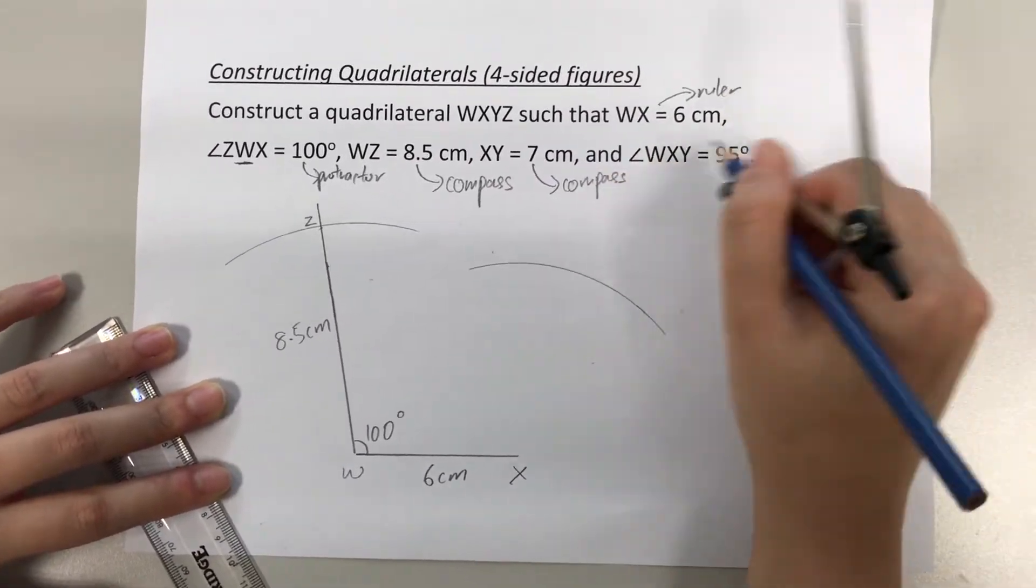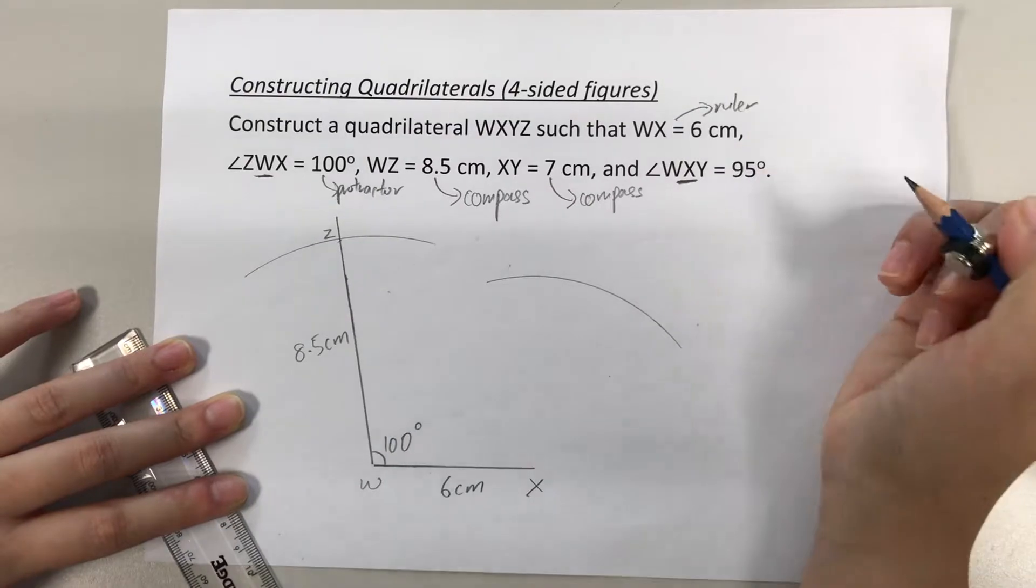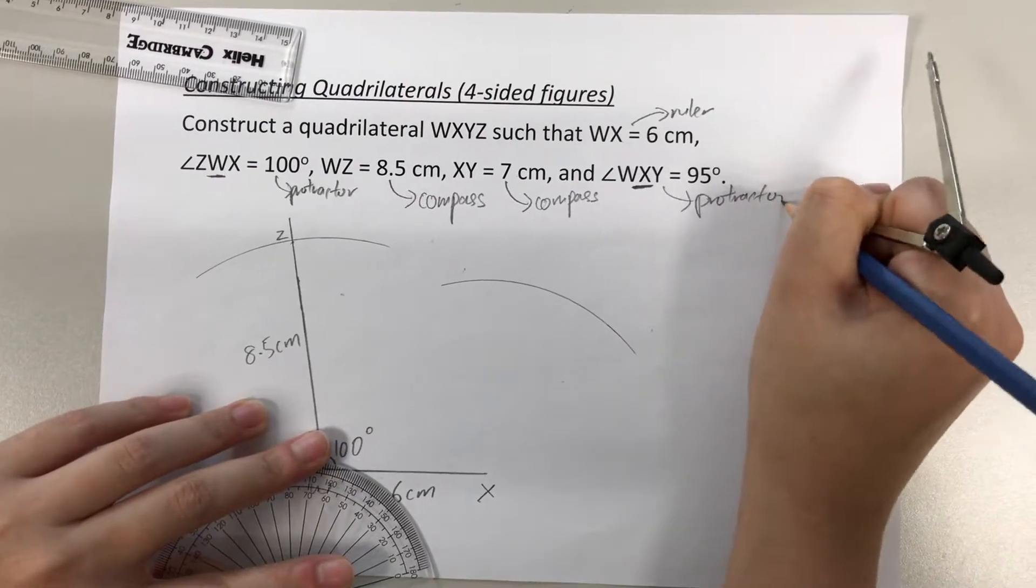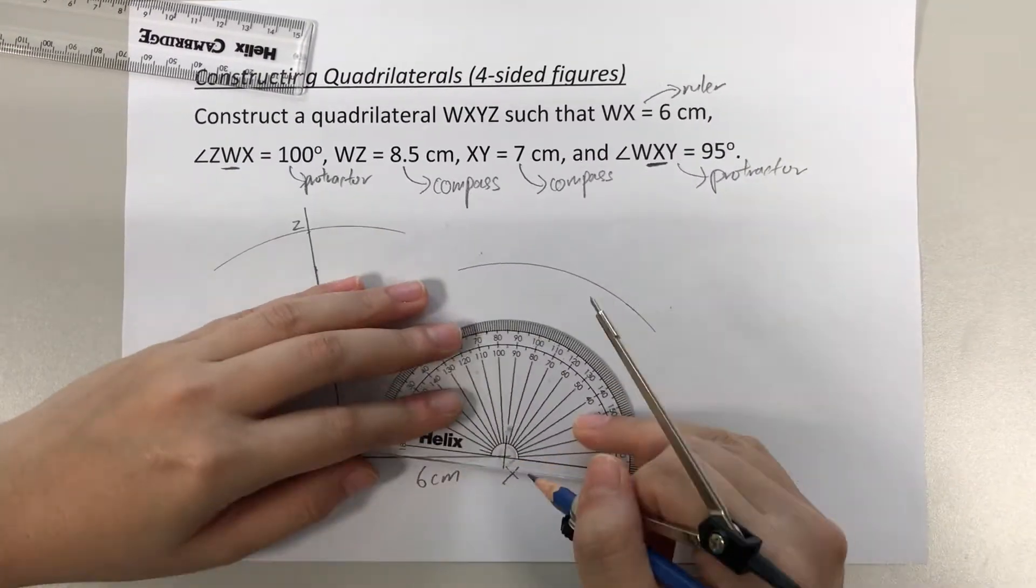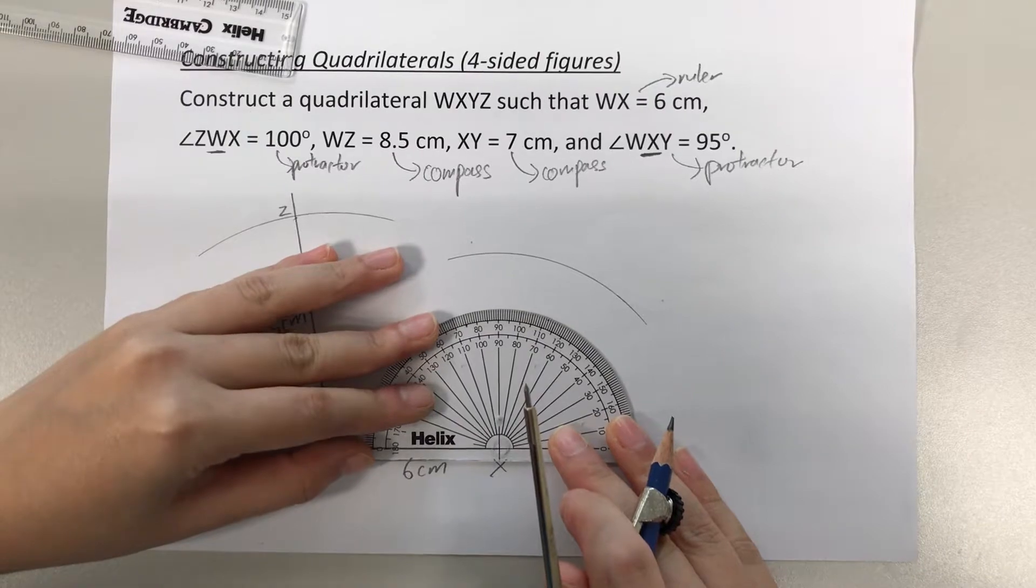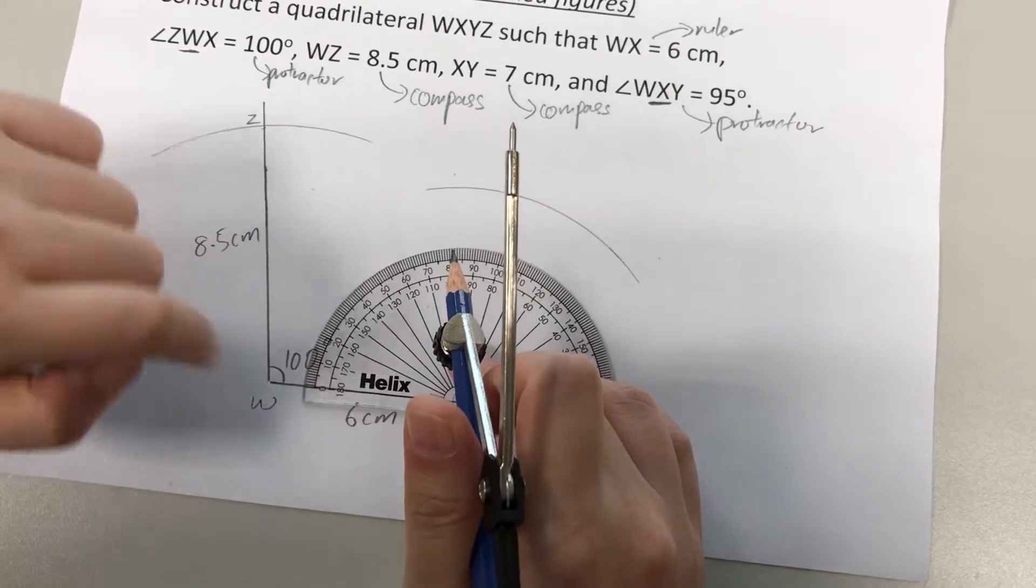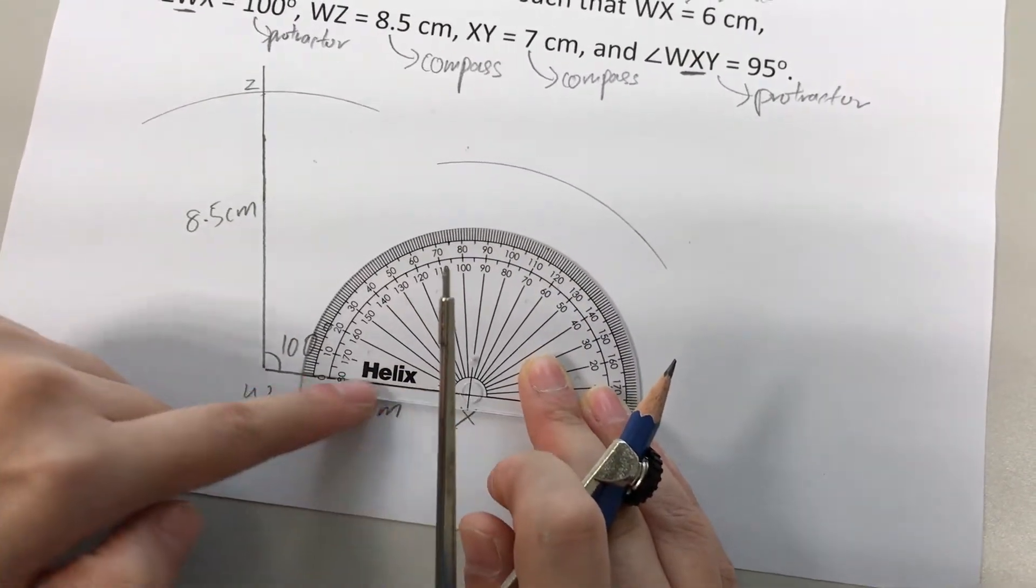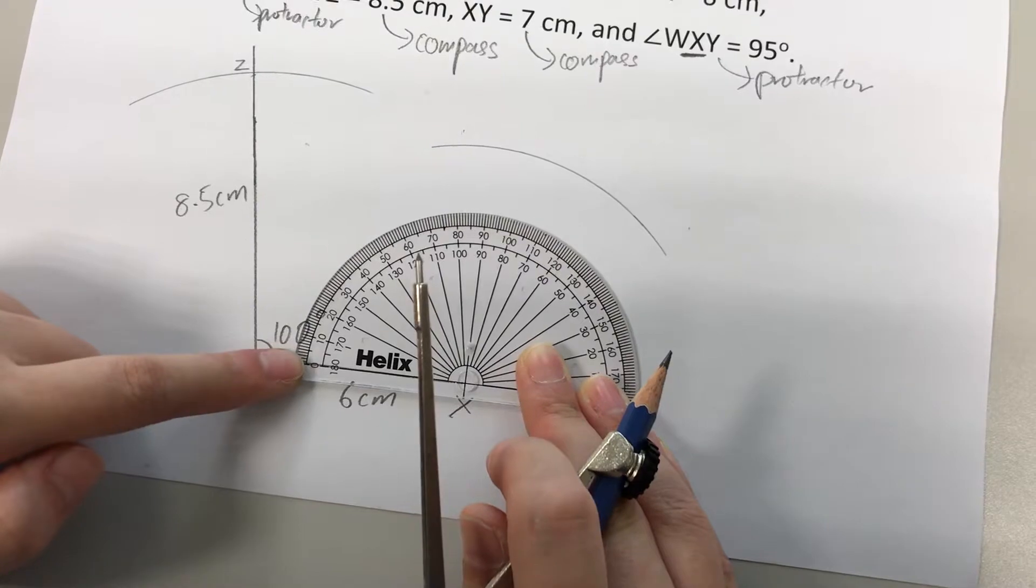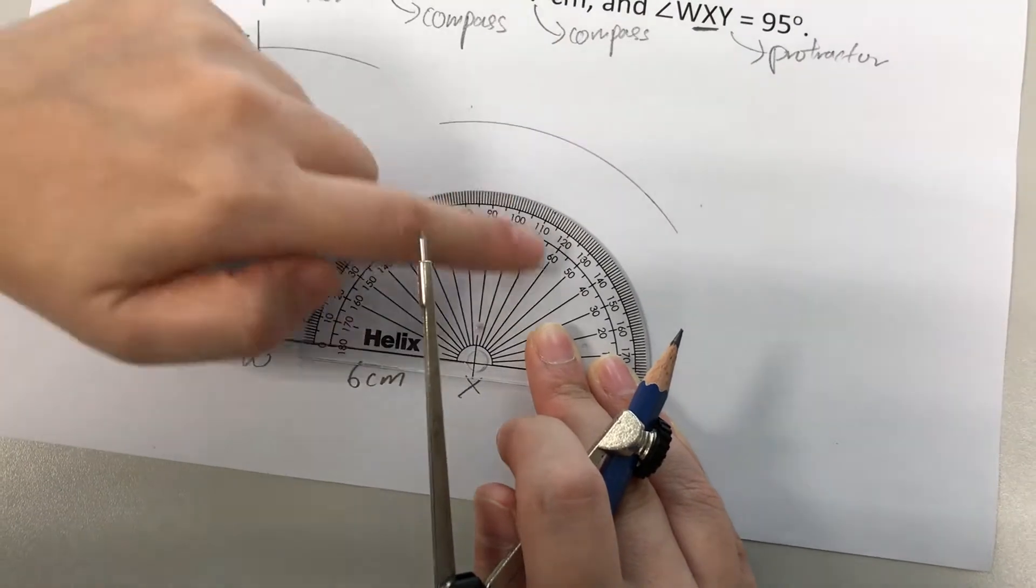We are left with one more information: angle WXY to be 95 degrees. So again, angle, zoom in to the middle letter. So this would be the angle at X. Angles will be drawn using protractor. So place your protractor at X, at point X over here. Alright, and you're supposed to draw 95 degrees. Okay, again, the trick here is to make sure you read the correct set of numbers. Okay, this starting line here has to point to 0. So the scale that points to 0 on this line is your outer scale.